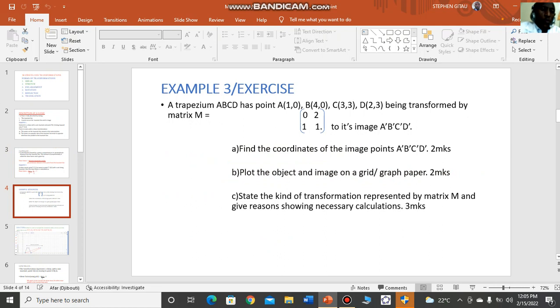I would like us to do an example together. A trapezium ABCD has point A(1,0), B(4,0), C(3,3), D(2,3) being transformed by matrix M, which I read vertically as [1,0; 0,1] to its image A'B'C'D'. In this one, I would like you to find the coordinates of the image points A', B', C', D'. As a reminder, we always pre-multiply the matrix of transformation to the object points to get the image points.